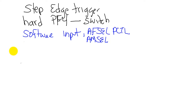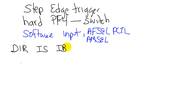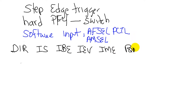The interesting step is to set up for the edge-trigger. We have the direction bit, the input sense bit, the IBE bit, the IBV bit, and the IME bit. These are the bits that we will set to specify the mode for edge-trigger.